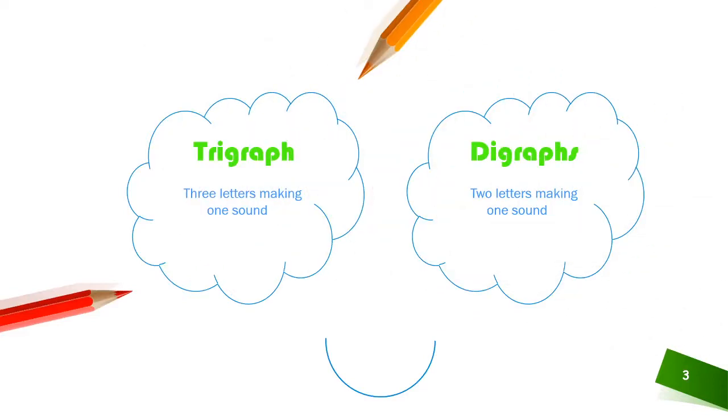Now here is the difference between trigraphs and digraphs. Trigraphs: three letters making one sound. Digraphs: two letters making one sound. See? Difference. Three, two. Three letters making one sound. Two letters making one sound.